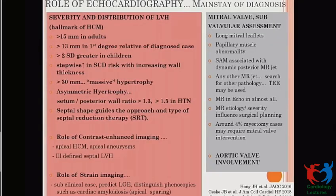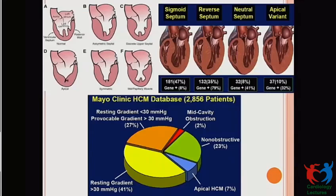Regarding echocardiography: in the pediatric population, more than two standard deviations is considered significant LVH. There is a stepwise increasing risk with increasing wall thickness. Contrast-enhanced imaging may be helpful in apical HCM and apical aneurysm. Strain imaging in subclinical cases may be useful and helps differentiate from amyloidosis, which has an apical-sparing pattern. Echocardiography also assists with mitral valve assessment, aortic valve assessment, and diastolic dysfunction assessment — higher grades of diastolic dysfunction carry worse prognosis.